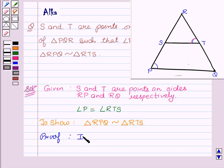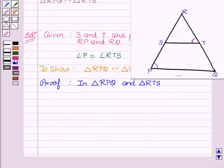In triangle RPQ and triangle RTS, we have angle P equal to angle RTS, which is given.